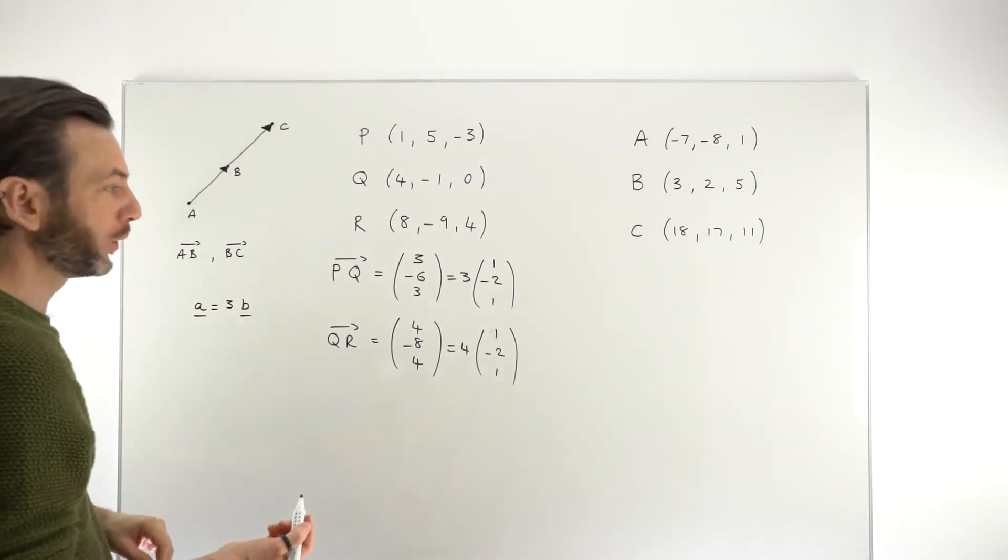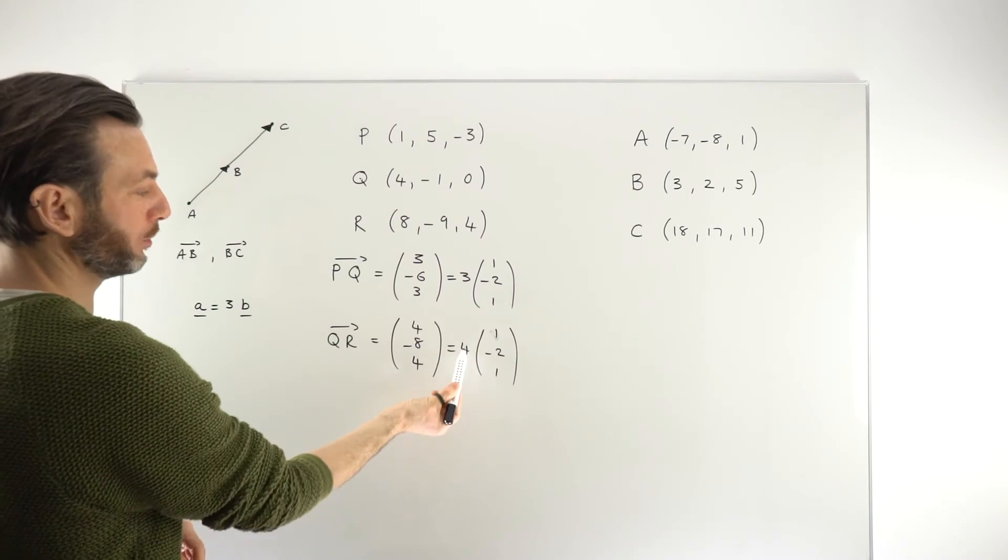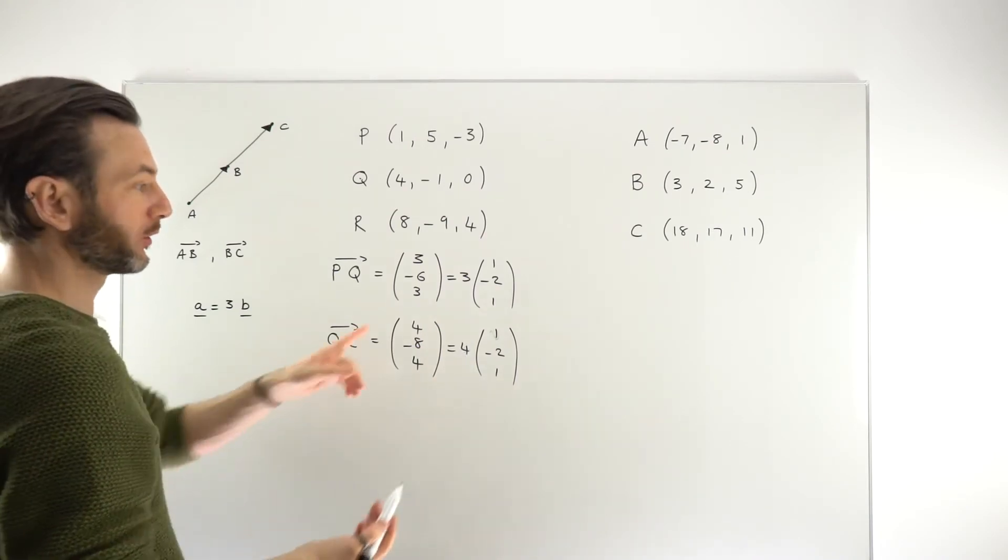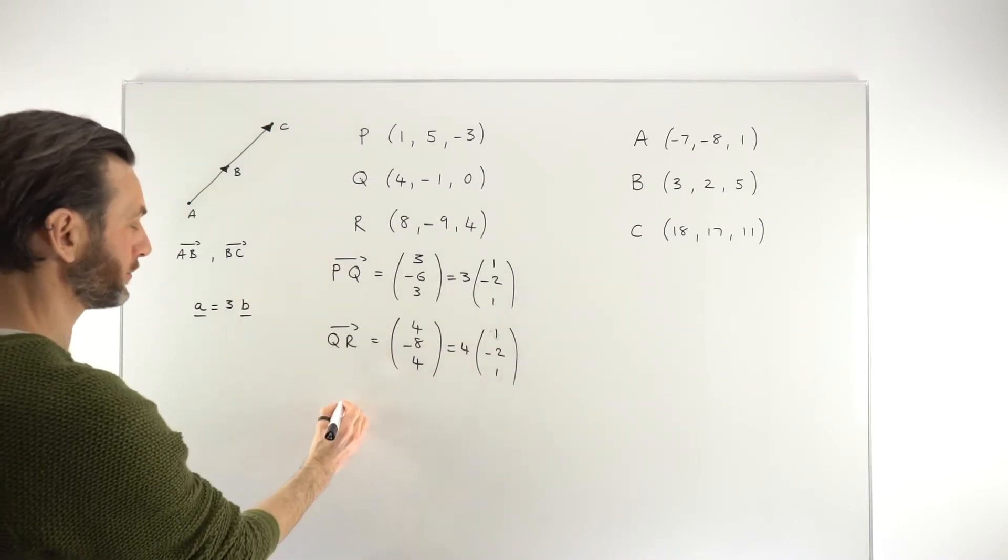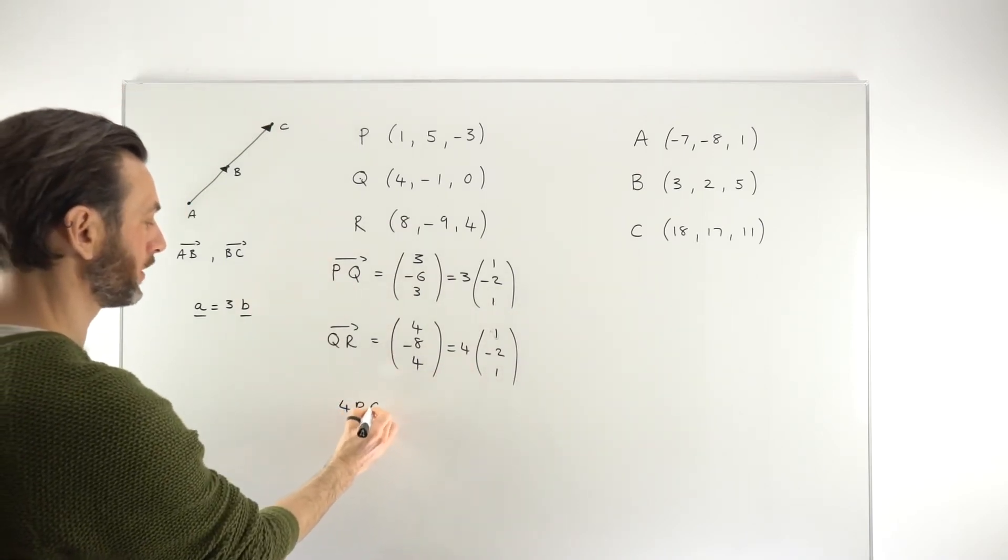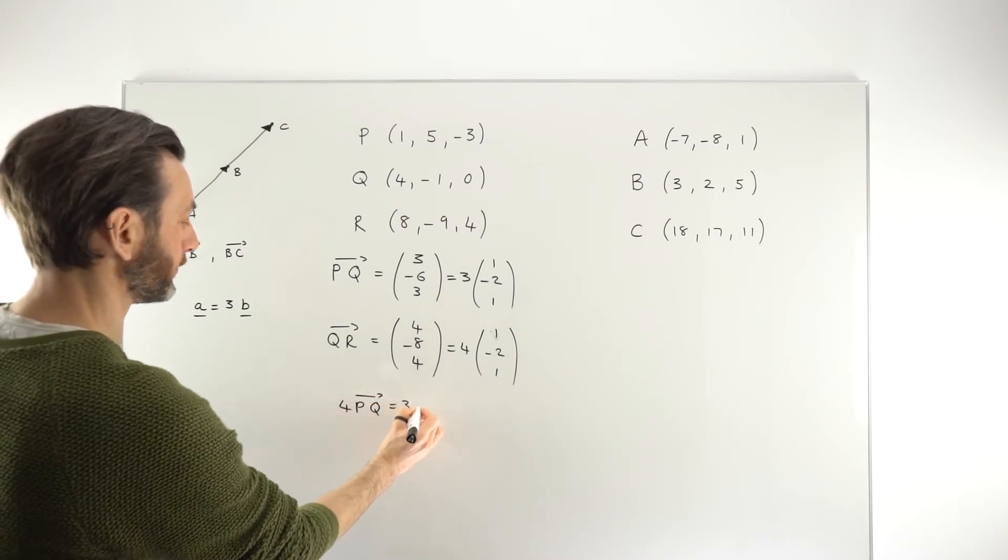How would you write that? Well, one way you could do it is if you multiply this vector by 4 and multiply this one by 3, they would be equal. In other words, 4 times this and 3 times this, and you can set those equal. So 4 times the vector PQ is equal to 3 times the vector QR.